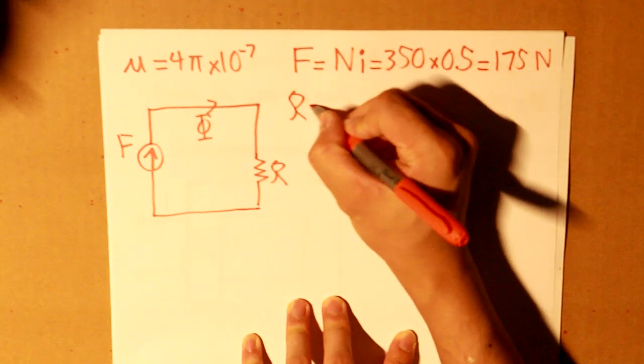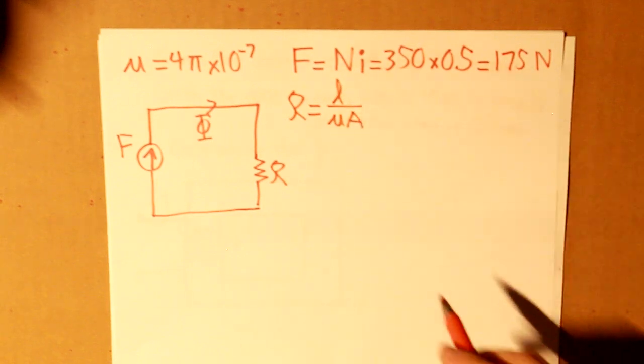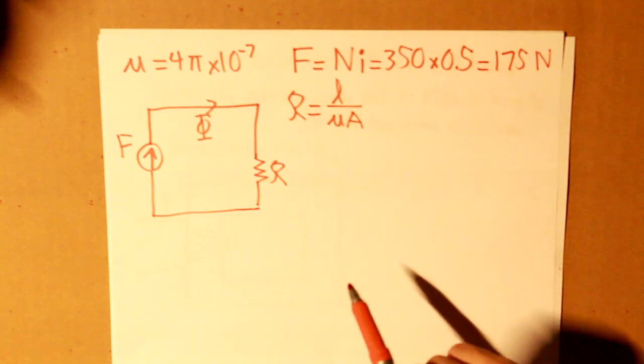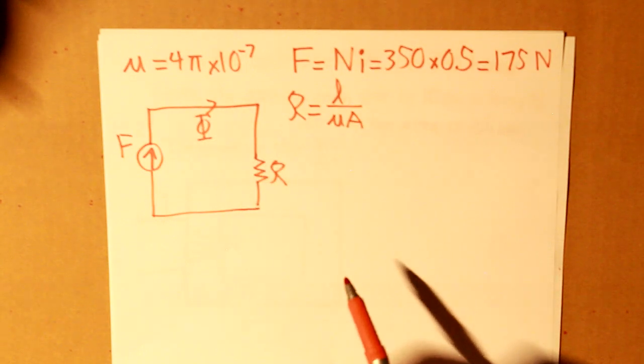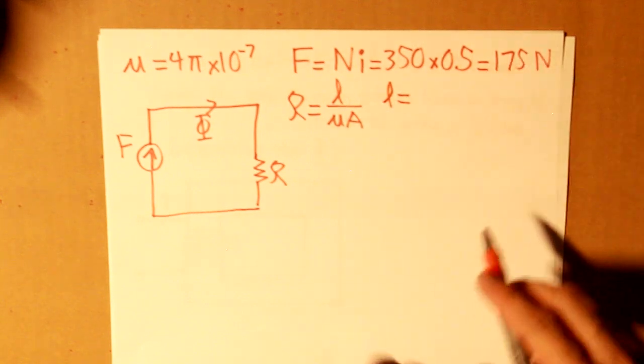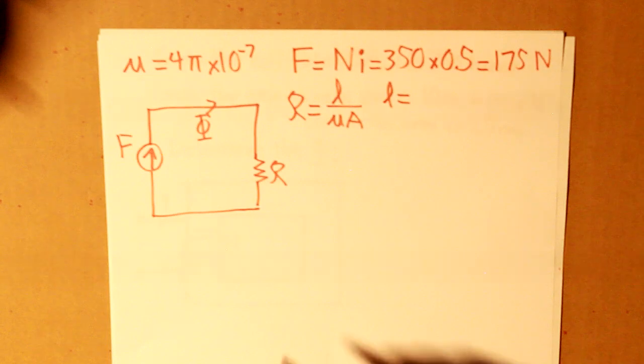For our reluctance, we have to determine what our cursive L and capital A is. Mu has already been given, and that is 4 pi times 10 to the negative 7. So, L, what we know is that each side is 10 centimeters in length.